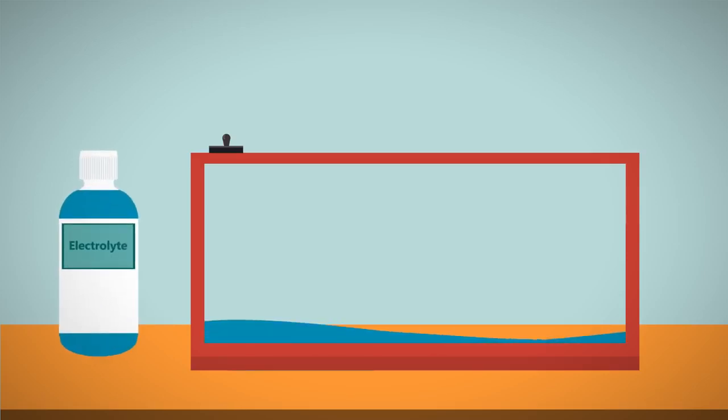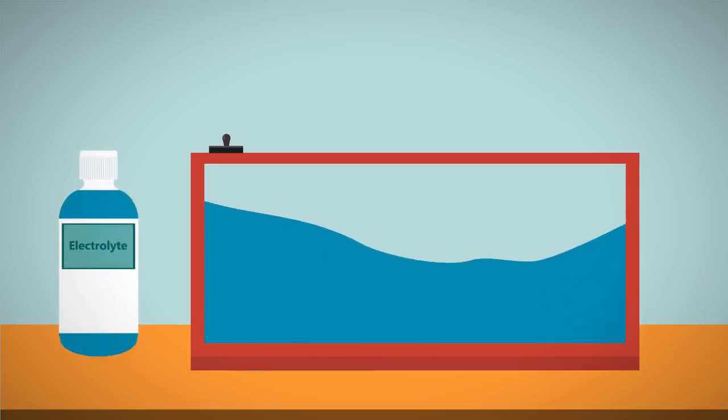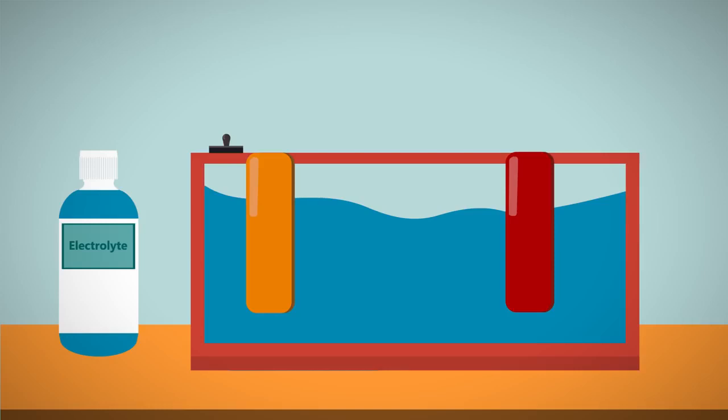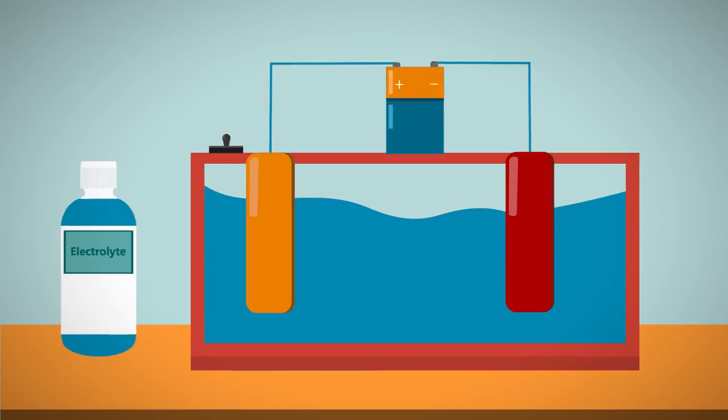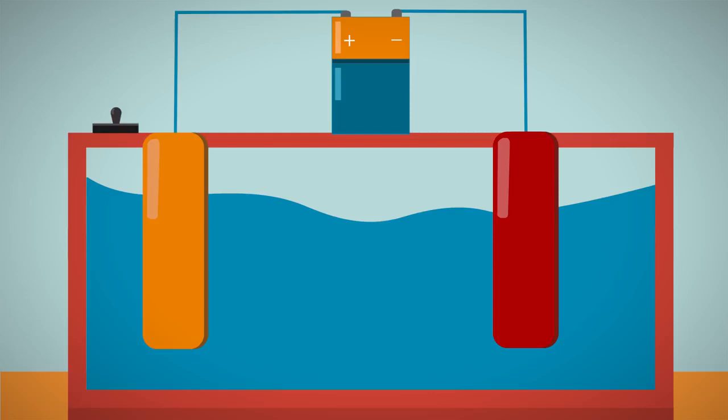So how does electroplating work? An electric current is passed through a solution that conducts electricity, called an electrolyte. To create this current, two electrodes are dipped into the electrolyte solution and connected to a battery or power supply. So we end up with a setup that looks something like this.